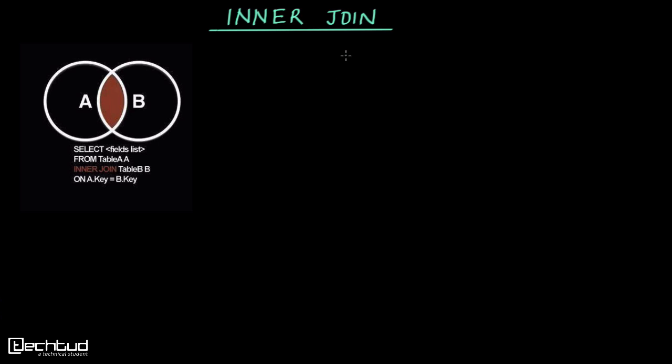we have inner join and outer join. Outer join has three types: left, right, and full outer join. Here we are studying inner join first. As the name suggests, while joining the tables or relations, we will only take the inner part. Let's understand it practically.